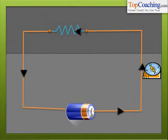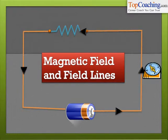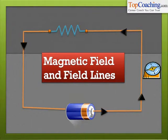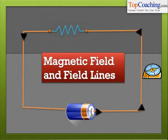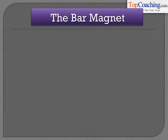The first section we will talk about in this chapter is Magnetic Field and Field Lines. Before we go deeper and understand the magnetic effects of electric current, we first need to understand what a magnet is and what forces a magnet exerts on its surroundings.